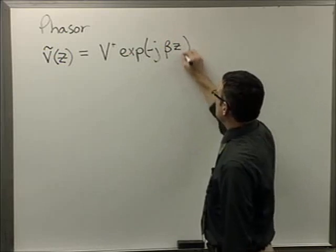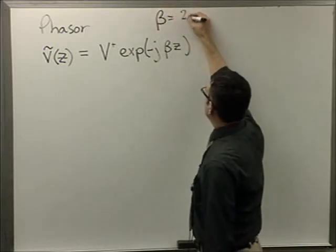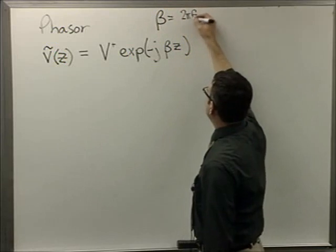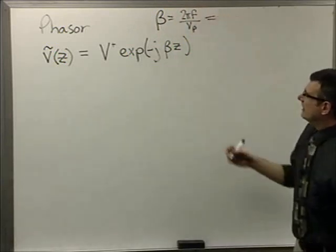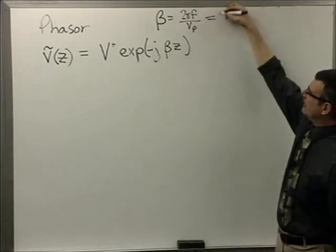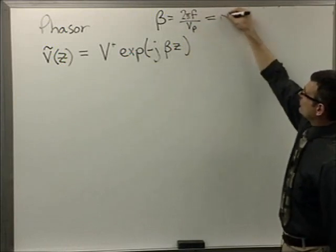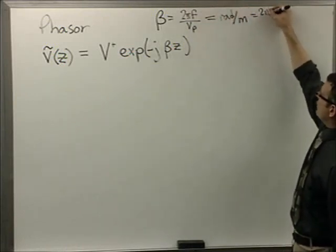It's beta z, where beta is 2πf over velocity of propagation. Or, you'll notice that this is 1 over seconds. f is units of 1 over seconds. This is meters per second. Here's a 2π. This is really radians per meter. 2π over the wavelength.